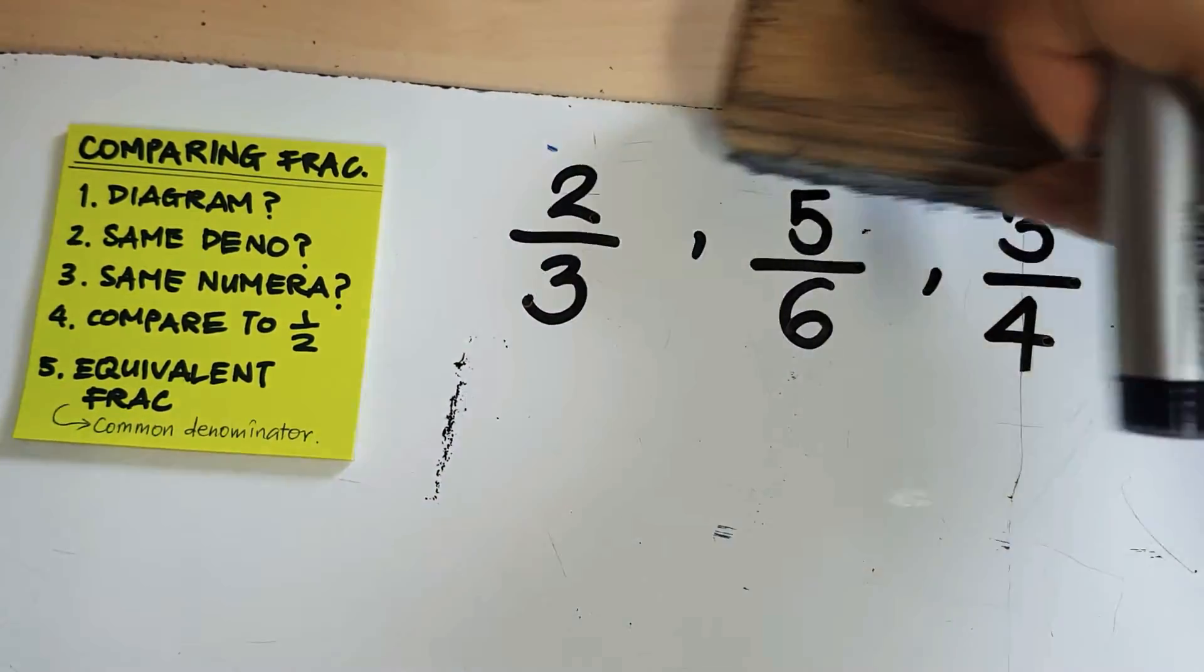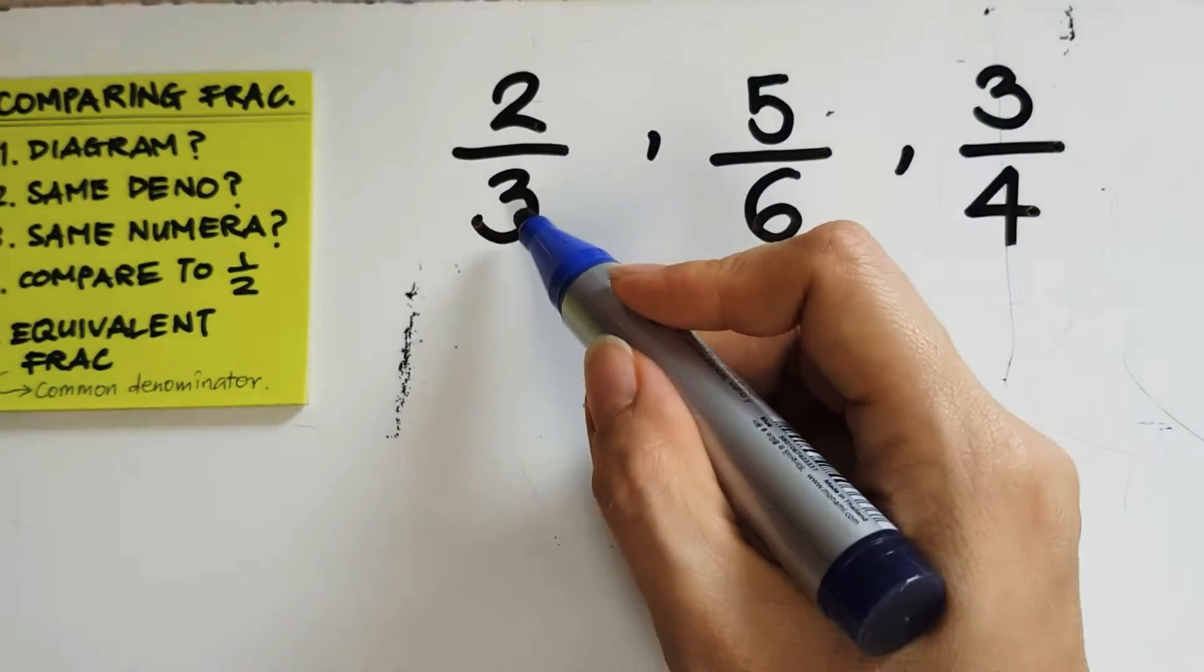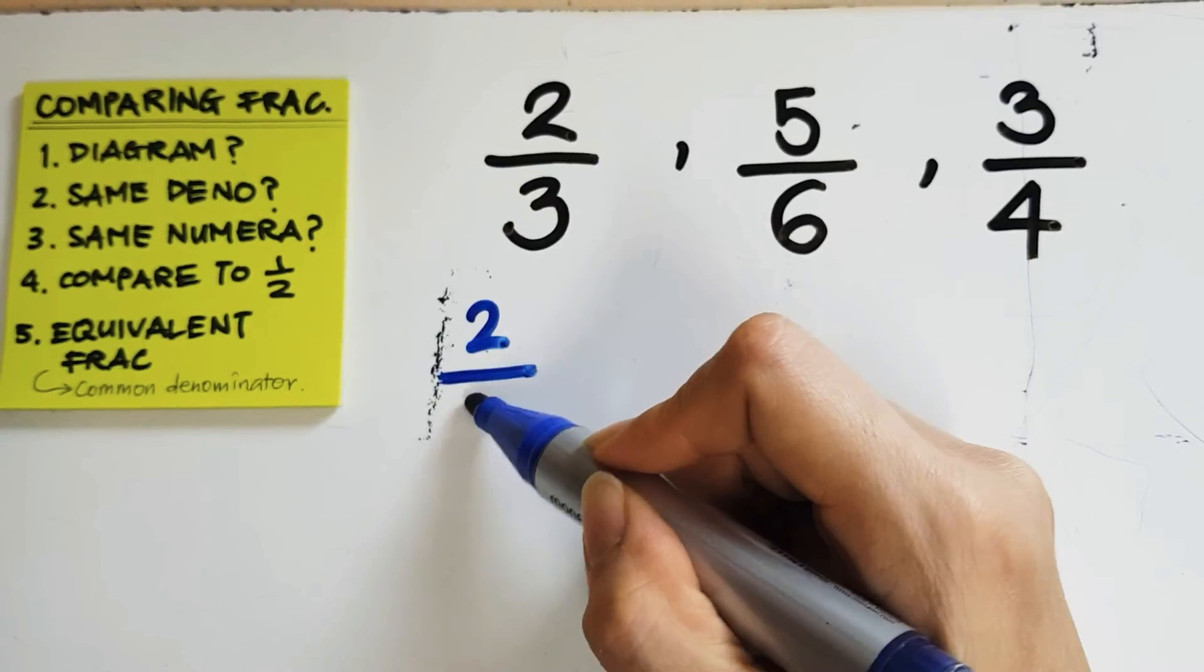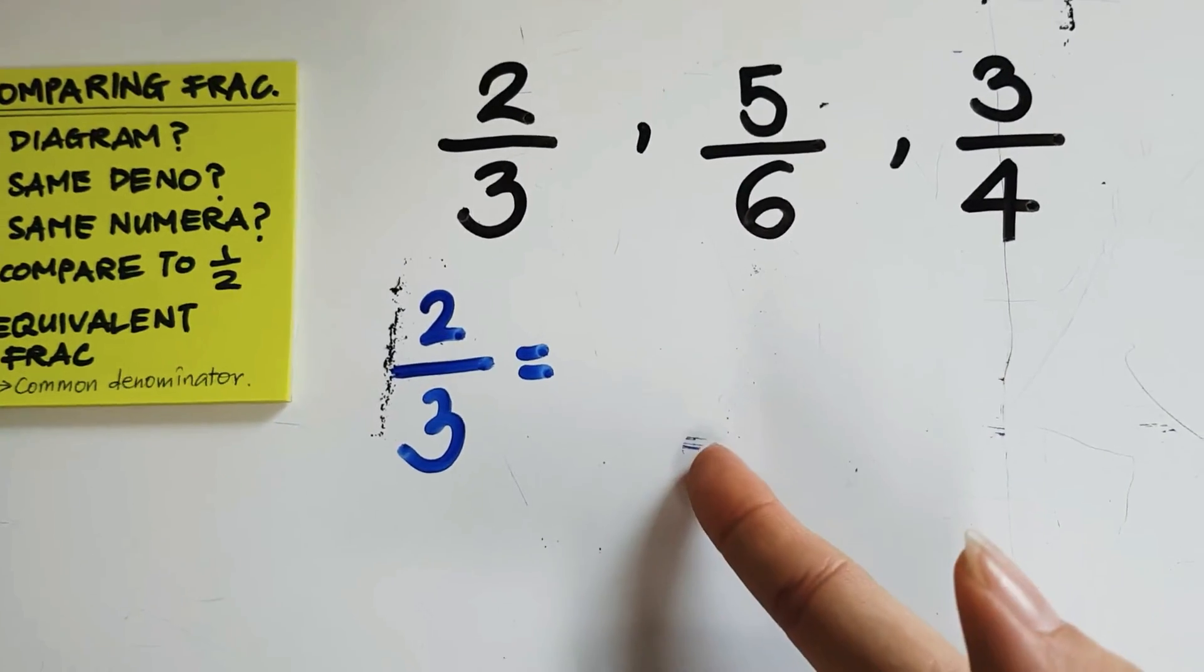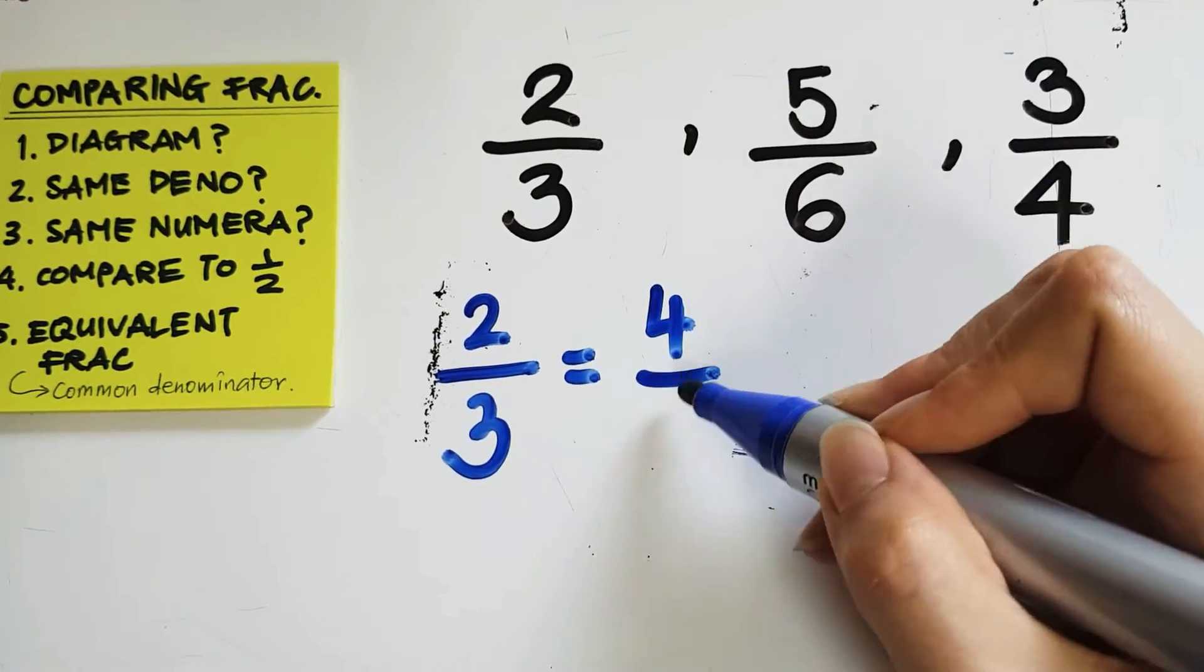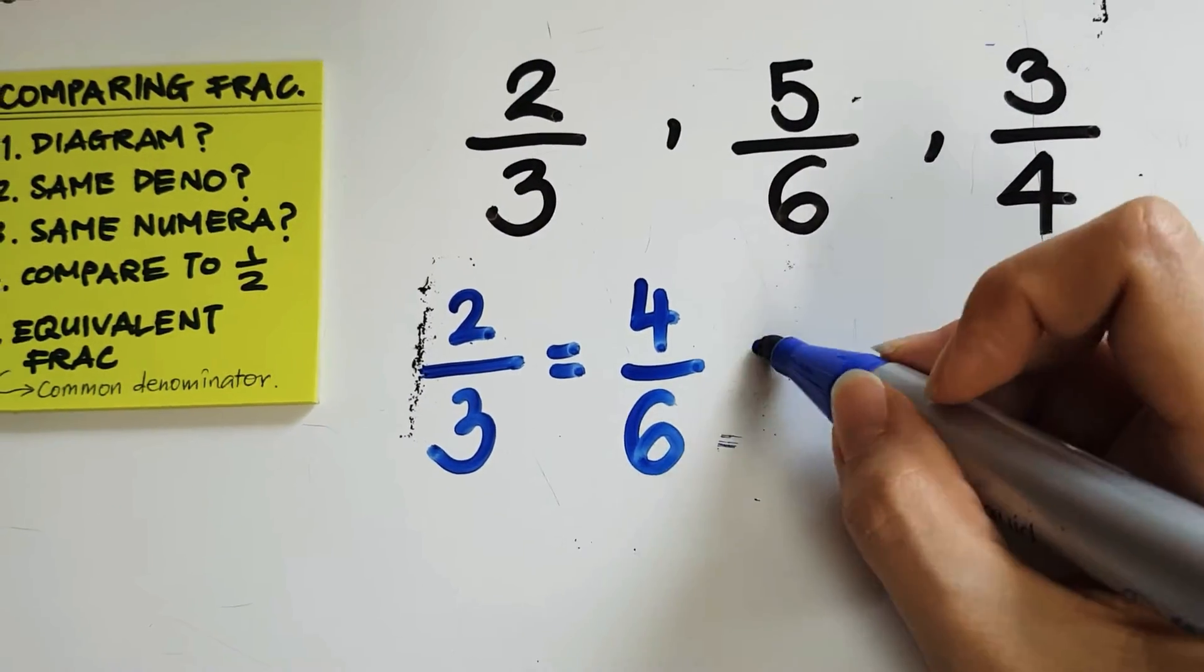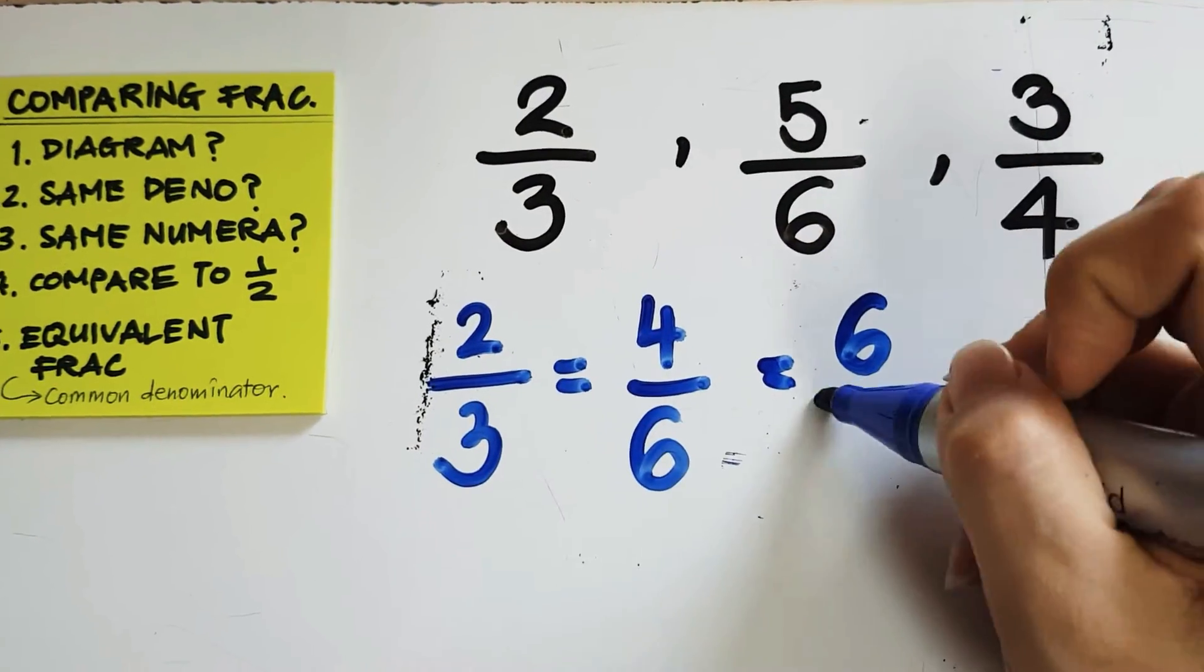Now, equivalent fractions is basically that we want to make it to a common denominator. So, I'm going to start with two-thirds. And I'm going to find the first equivalent fractions, which is times 2 on the top and times 2 below. The next equivalent fraction, times 3, times 3, 2 times 3 is 6, 3 times 3 is 9.